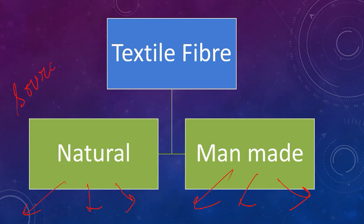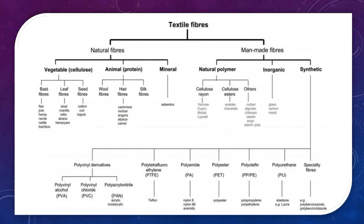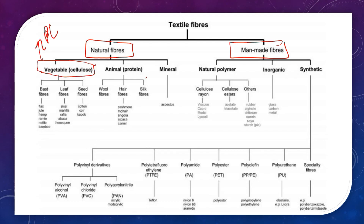So natural fibers, depending upon the source, may be vegetable-based — that is plant-based — or animal protein-based. The third is mineral; there is only one mineral-based textile, which is asbestos, and it is now discarded because of its hazardous character. I highly recommend you take a printout of this classification chart and paste it on your wall. Try to remember this chart — it is going to help you a lot. First classification: natural fiber and man-made fiber.